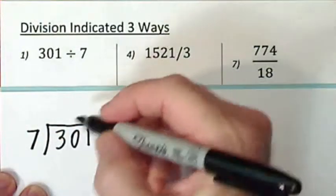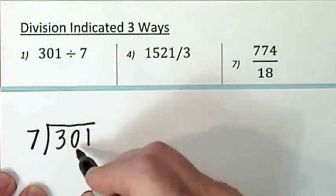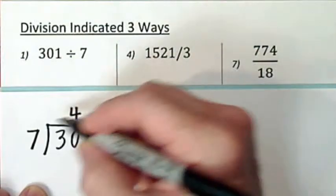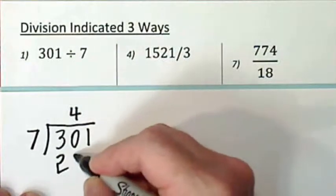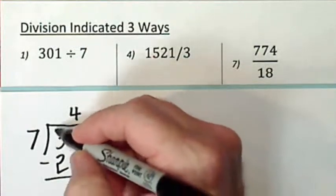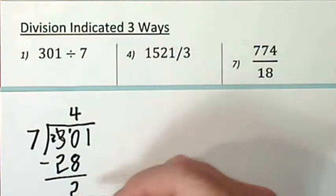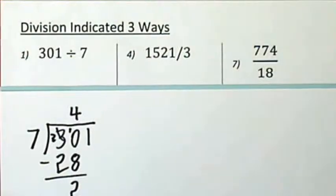It won't go into three, but I can ignore that. Seven goes into thirty, four times. Four times seven is twenty-eight. Then you subtract and bring down the next digit.